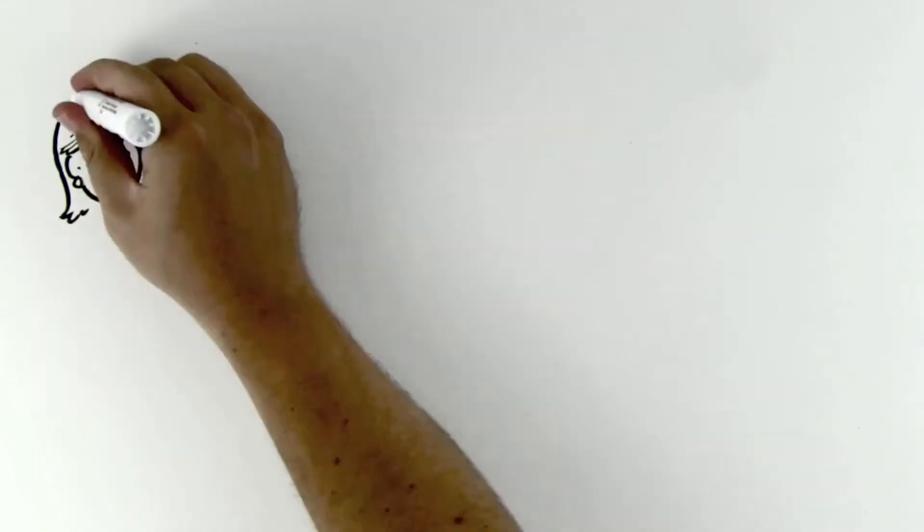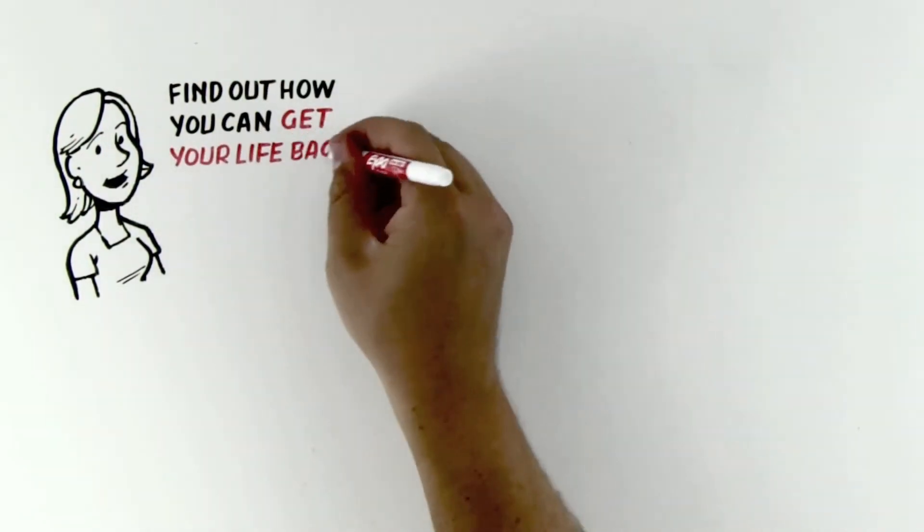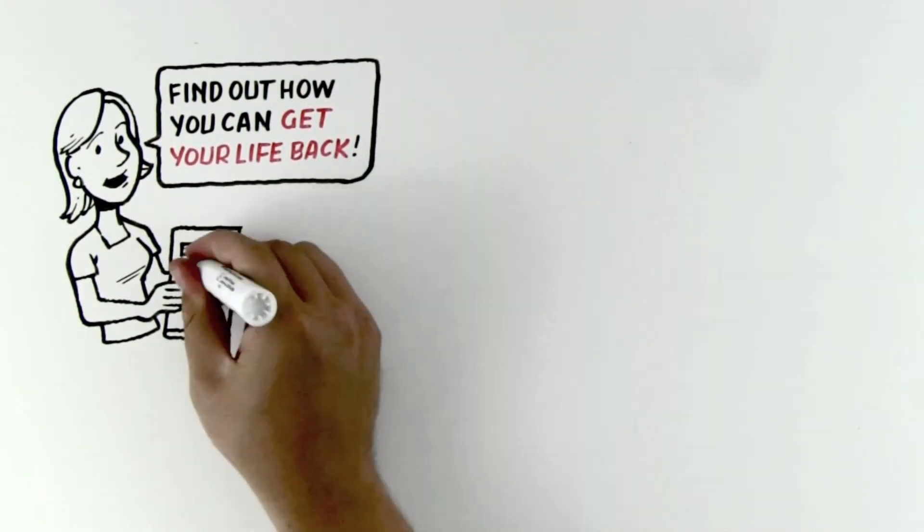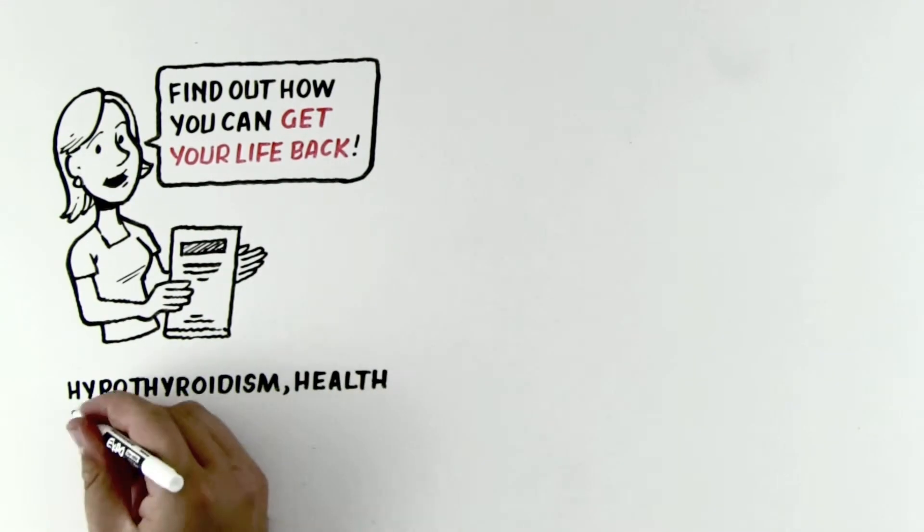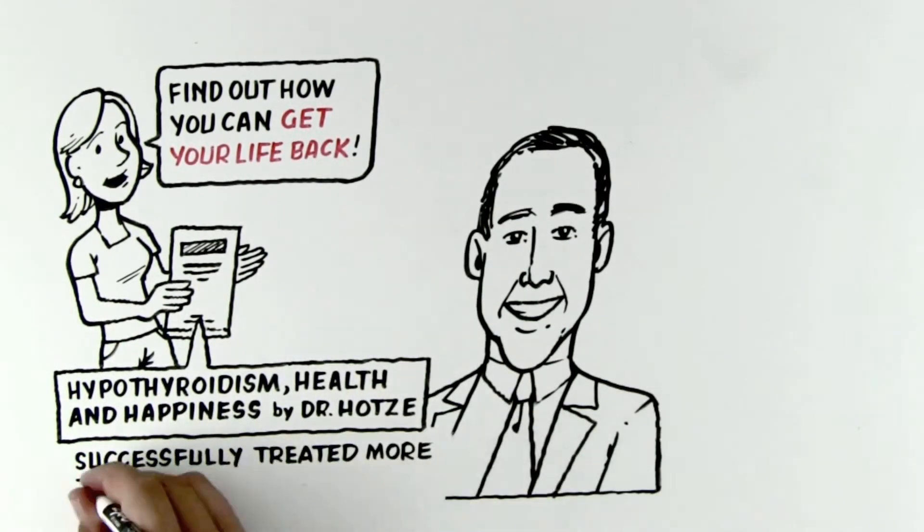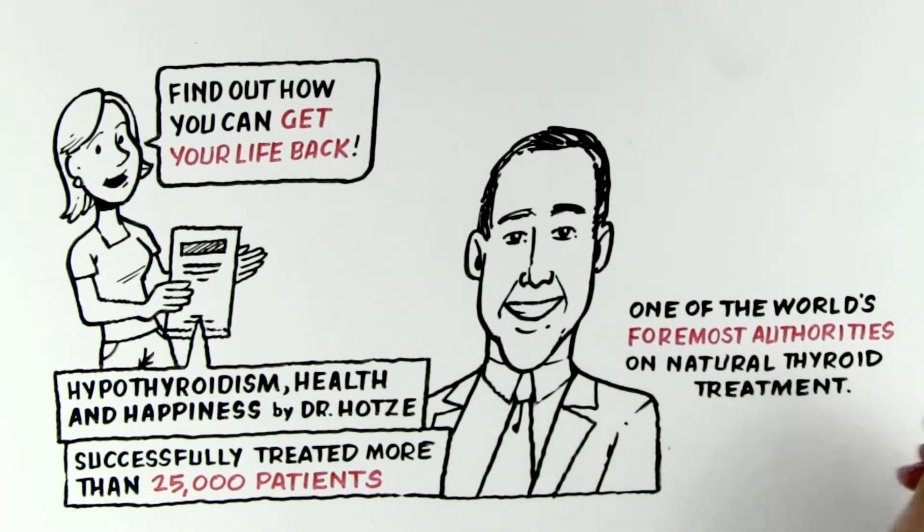And if my story sounds a little too familiar to you, you owe it to yourself to find out how you can get your life back safely and naturally. You can start by reading Dr. Hootsie's new book, Hypothyroidism Health and Happiness. Dr. Hootsie has successfully treated over 25,000 patients for hypothyroidism and is one of the world's foremost authorities on natural thyroid treatment.